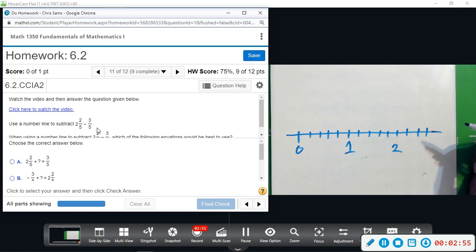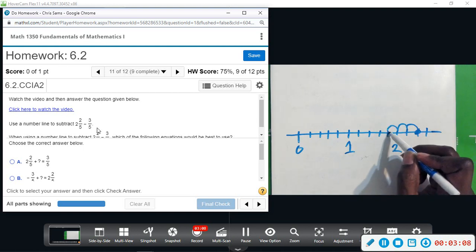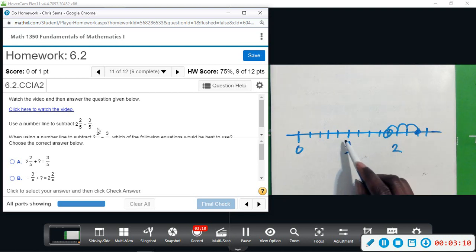Okay, so we have two and two-fifths, we're here. And then we want to subtract three-fifths, and we go back one, two, three. And so we would be here. This represents one and four-fifths. So just break the number line down